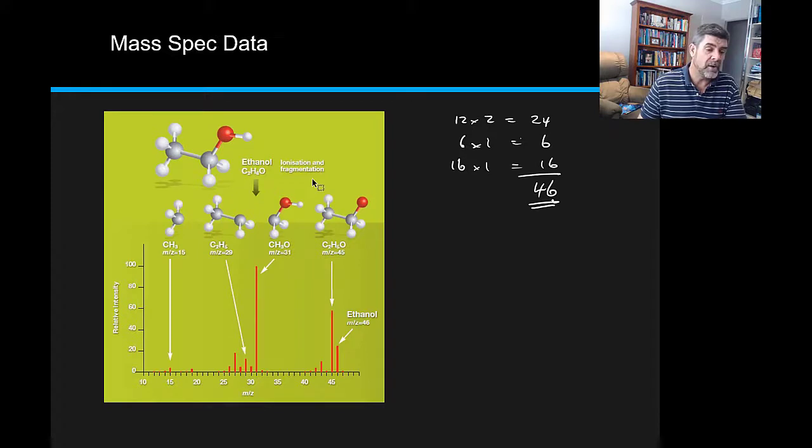Now we would go a lot more specific if we were to go through our calculations, but in actual fact, what we find is that it's just as easy to round these off to help you identify where some of these fragments might be. So the whole molecule would have a mass of 46 and you can see that the highest peak there is actually a peak of 46.